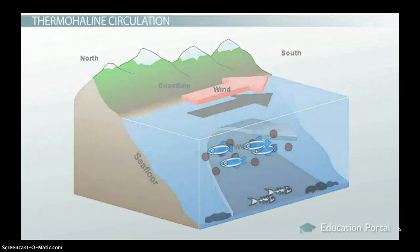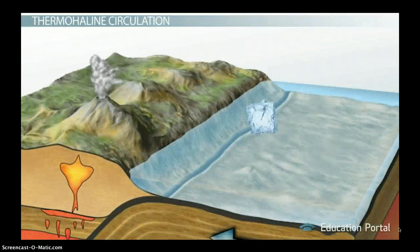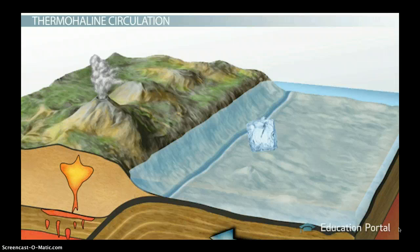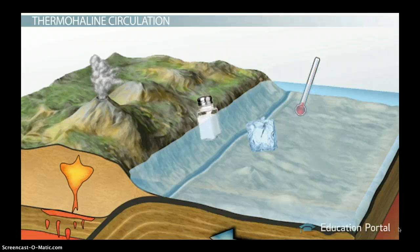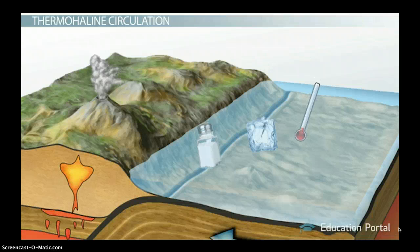Deep ocean currents are strongly driven by the density of the ocean waters, and the density of ocean water is mainly dependent on the water's temperature and salinity, or salt content. Basically, the colder and saltier the ocean water is, the denser it will be, making it sink toward the ocean floor.